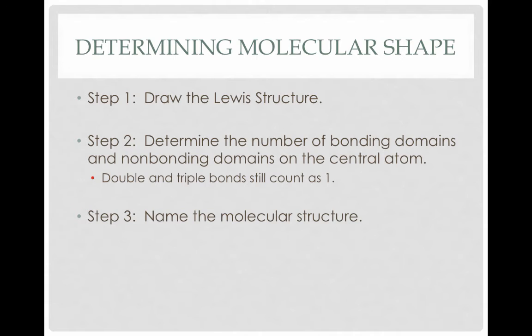Here are the steps that will help us determine molecular shape. We start by drawing the Lewis structure. From the Lewis structure, we determine the number of bonding domains and non-bonding domains on the central atom. Using this information, we can determine the molecular shape. It's important to note that when counting bonding domains, double and triple bonds count as one bonding domain, not two and three respectively. So no matter what kind of bond is forming, we count it as a single bonding domain.